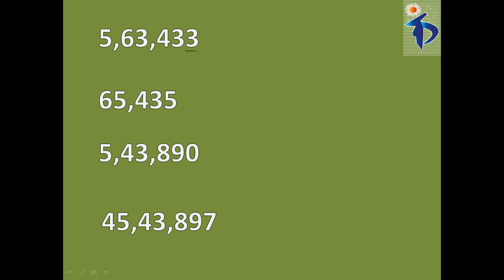The first number is 563,533. The unit digit is 3, so it is not divisible by 5, because the unit digit is not 0 or 5. The next number is 65,435. The unit digit is 5, so this number is divisible by 5. The next number has a unit digit of 0, so it is also divisible by 5. The next number has a unit digit of 7, so it is not divisible by 5.